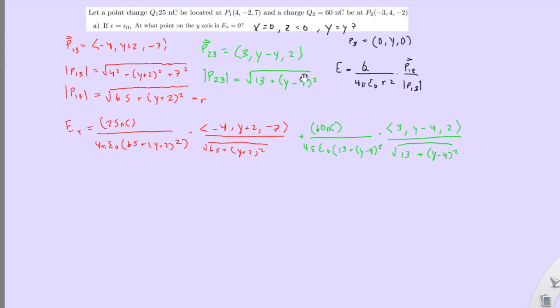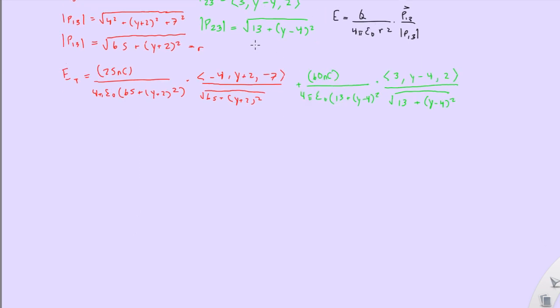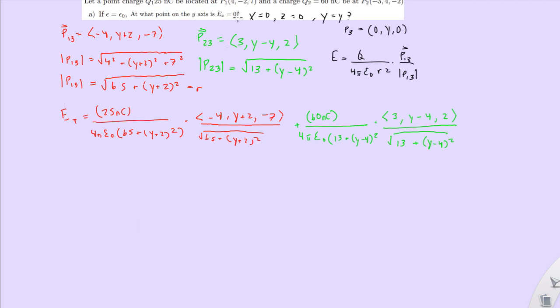But, so now we have to look at the problem and see what we want to do. So, we're looking for the y-axis where the x component is equal to zero. So, we need the x component of the electric field. So, first, we need to convert this total, E total, into E total x. So, how do we do that? Well, basically, E total x is just the x portion of this whole thing. So, you basically would just not worry about the y and z components. You basically cancel those out. And then you're left with just the x component of the problem. It's actually pretty simple.